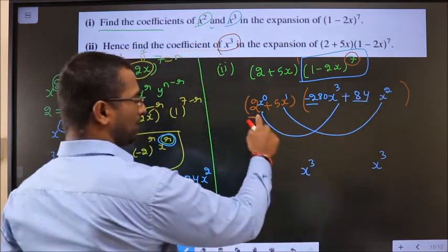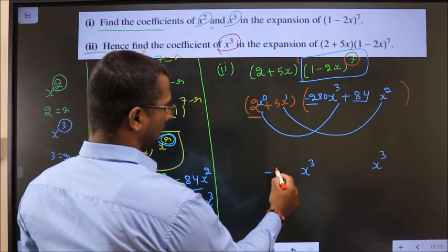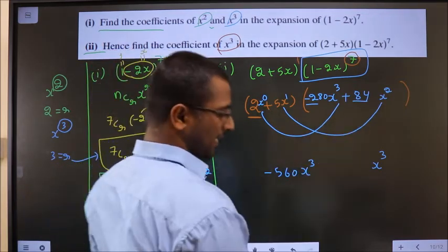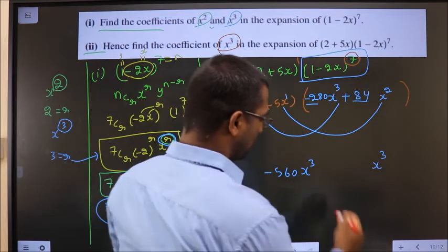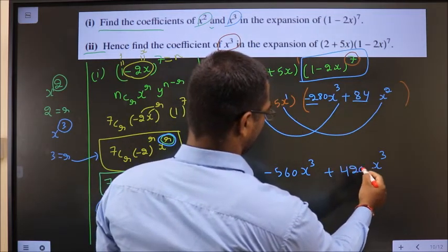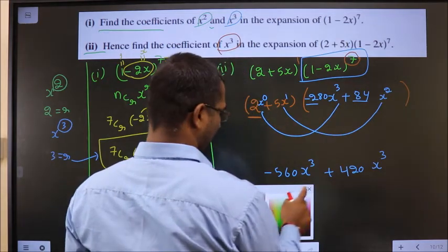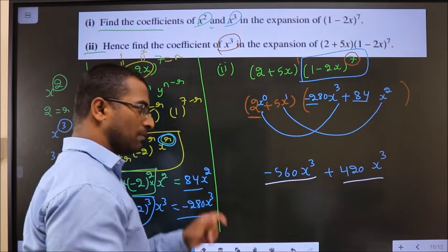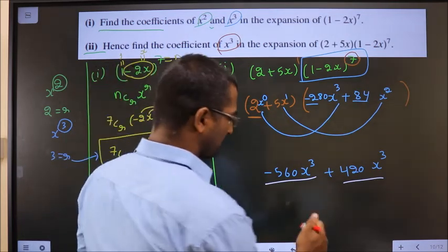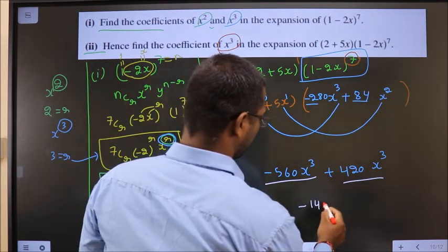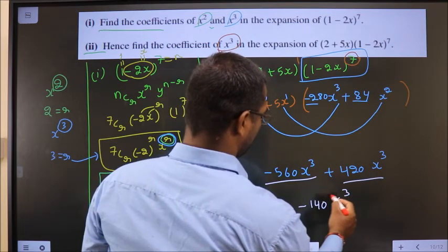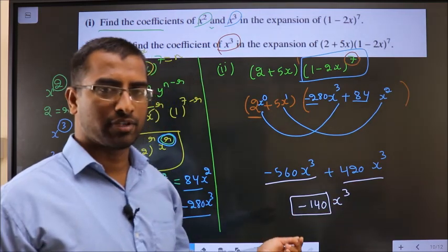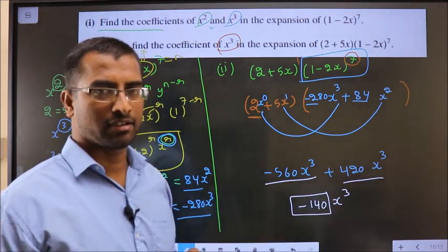So multiplying: 2 times minus 280 gives minus 560, and 5 times 84 gives plus 420. These two are like terms: minus 560 plus 420 equals minus 140. So the coefficient of x cubed in the expansion of (2 plus 5x)(1 minus 2x)^7 is minus 140.